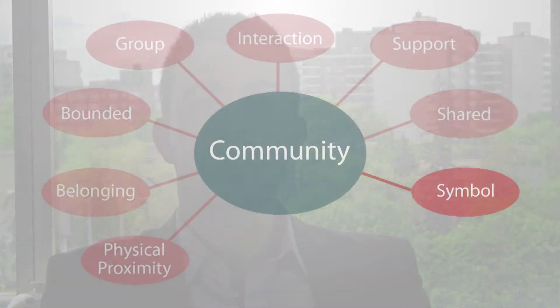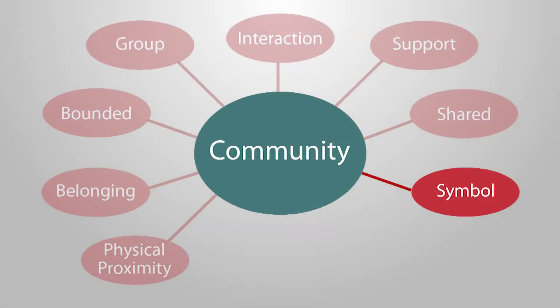Symbol was common theme number eight. This theme says that community is just a concept — it is abstract, theoretical, and ambiguous. The presence or absence of one of the factors in a community is often subjective and conceptual rather than observable.